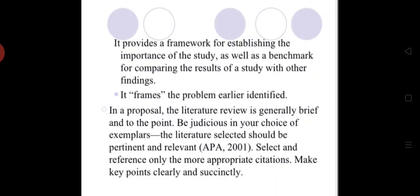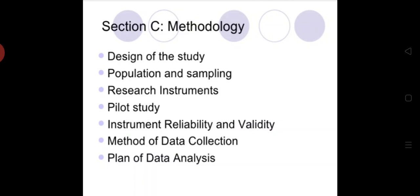Select and reference only the most appropriate citations and make key points clearly. When writing your research proposal's literature review, you should be brief and try to include the most recent and most relevant works related to your topic. Section C is the methodology. After writing the introduction part and the literature review, you give the methodology. You have to explain your research methodology very well in your research proposal. In the methodology part, you are going to include the design of the study.